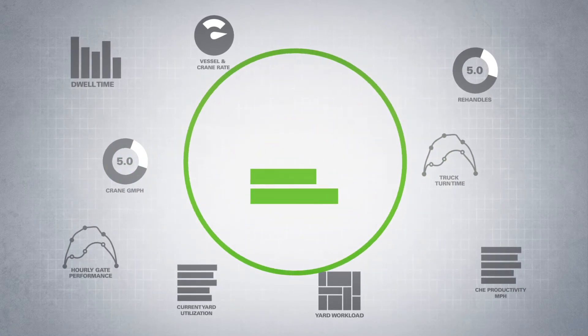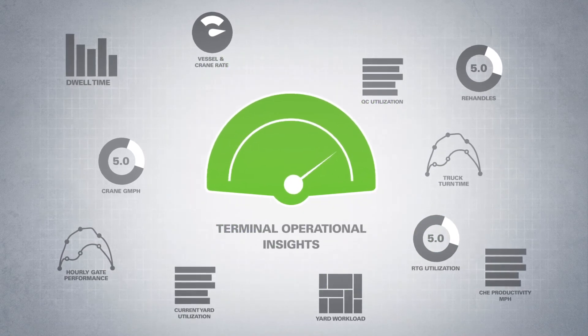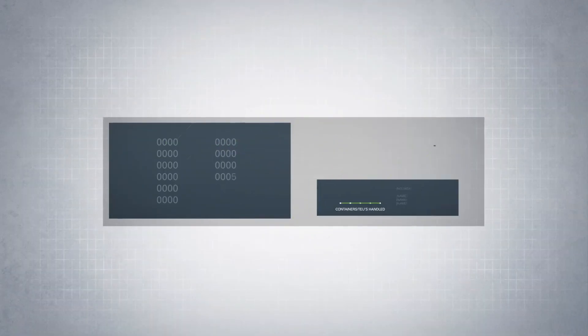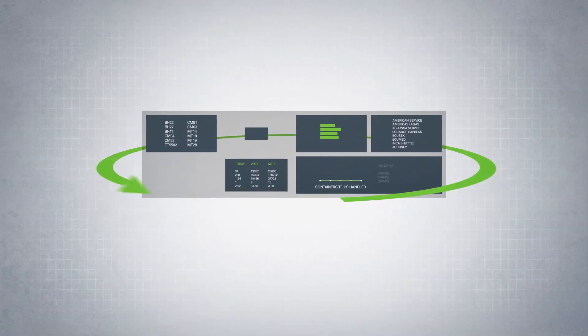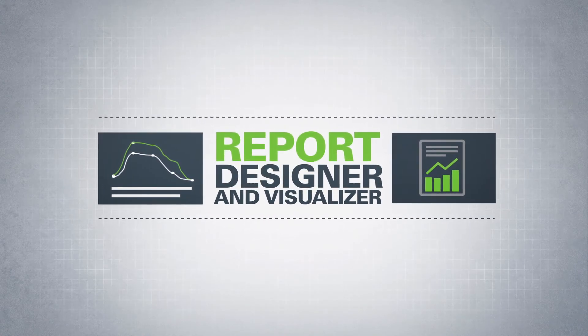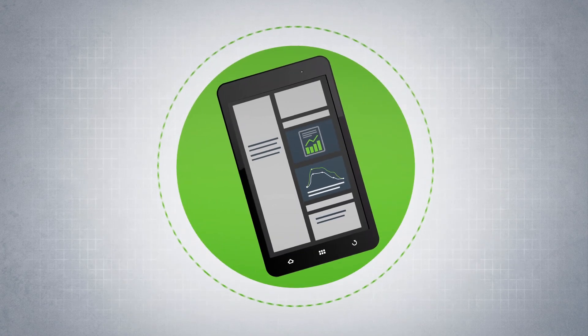With the Navis BI portal, terminal operators get a comprehensive 360-degree view of operations with current and historical data analysis, dashboards, reports and KPIs that are easily configurable, a user-friendly and intuitive report designer and visualizer, the ability to view dashboards and reports on mobile devices.